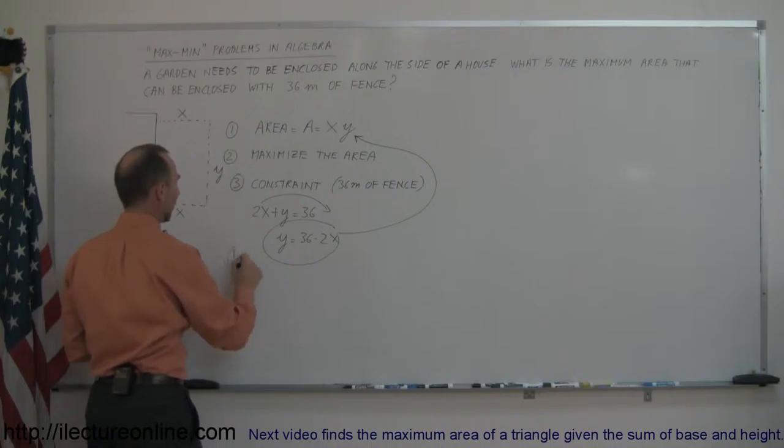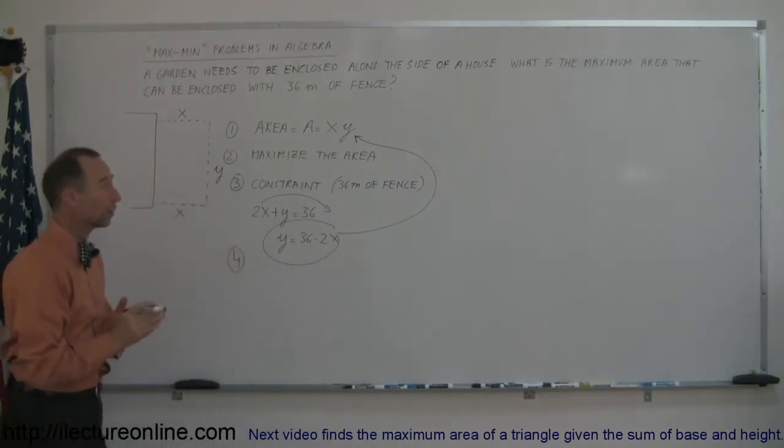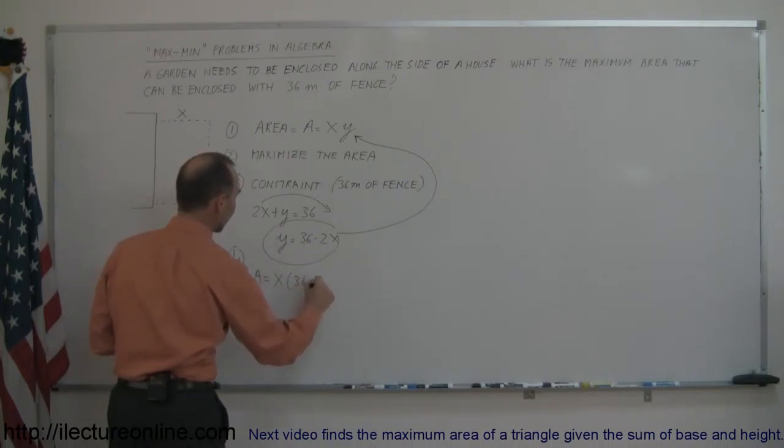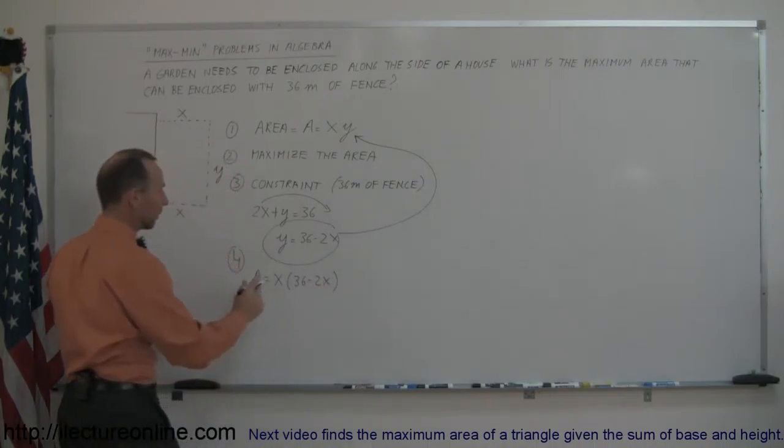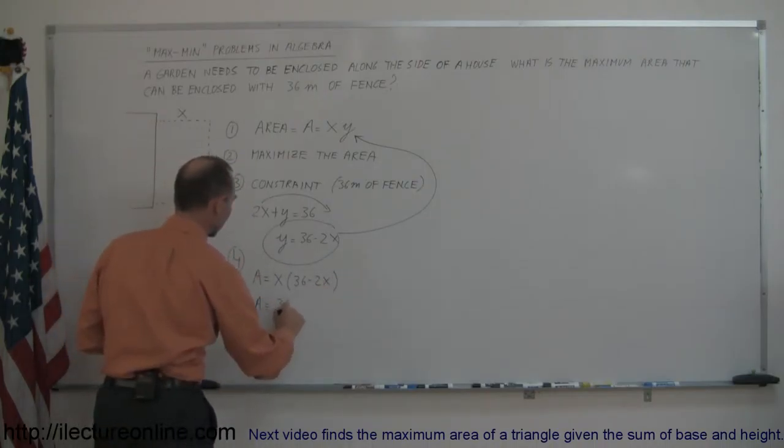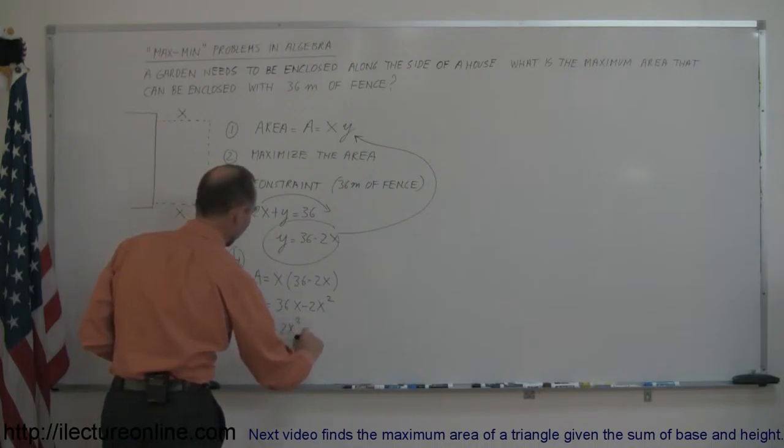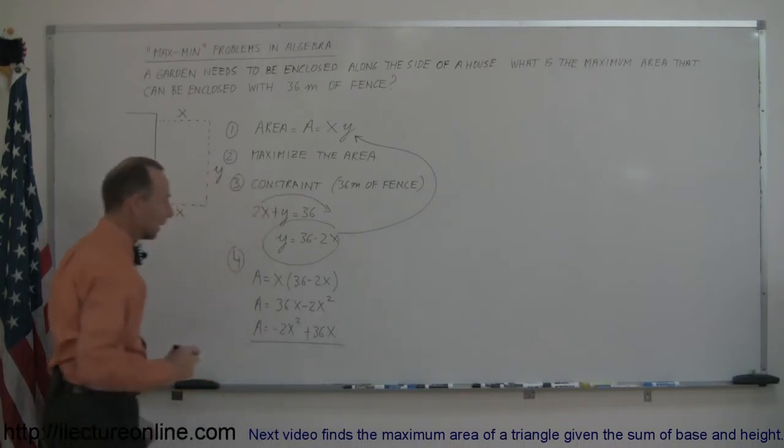We now develop the equation with only one of the two variables. Now we can say that the area is equal to x times y. But instead of y, we're going to write what y is equal to, which is 36 minus 2x. And if you multiply this out, we get area is equal to 36x minus 2x squared. Or if I rearrange it, I can say a is equal to minus 2x squared plus 36x.